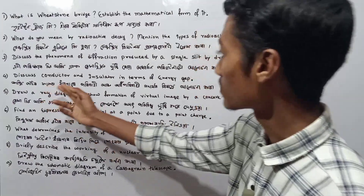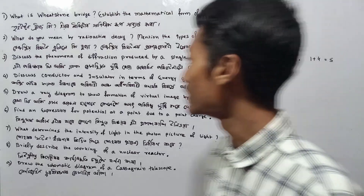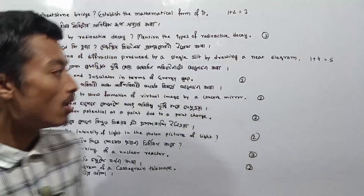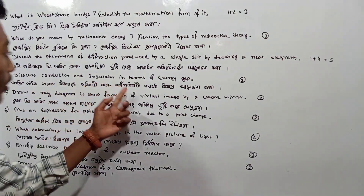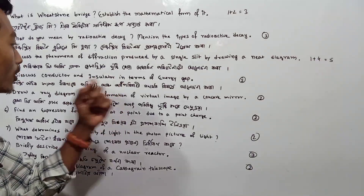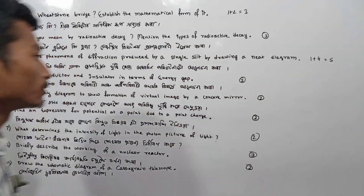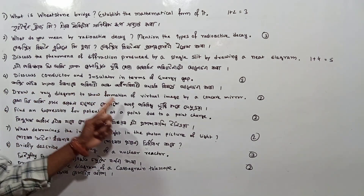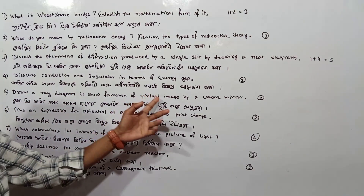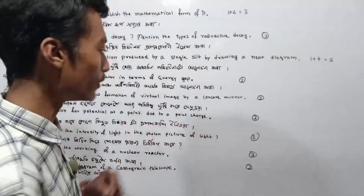Next question: Discuss conductor and insulator in terms of energy gap. Explain the difference between conductor, insulator, and semiconductor based on energy gap. This carries 2 marks.